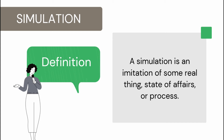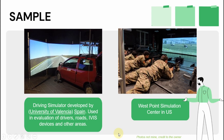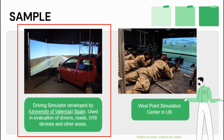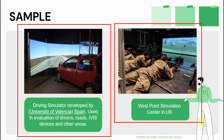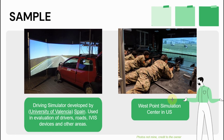Here are some samples of finished product simulation. Car simulators are used in different ways — like this sample from the University of Valencia, Spain. This simulator is used in evaluation of drivers, roads, IVIS devices, and other areas before they go to the real street. Another example is US military training at the West Point Simulation Center.